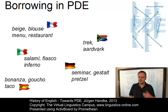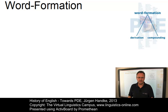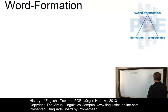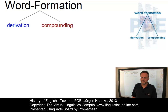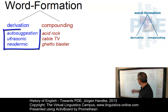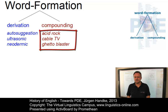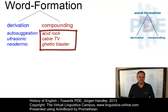Another method of expanding the vocabulary of present-day English is the creation of new words by means of word formation processes. These processes have led to an enormous rate of vocabulary expansion by means of standard processes such as derivation and compounding. In derivation, several new affixes came in such as autosuggestion, ultrasonic, neodermic, and so forth, enormously expanding the pool of derivatives. And in compounding, the most common type by far is a combination of two existing nouns, as in acid rock, cable TV, and ghetto blaster.